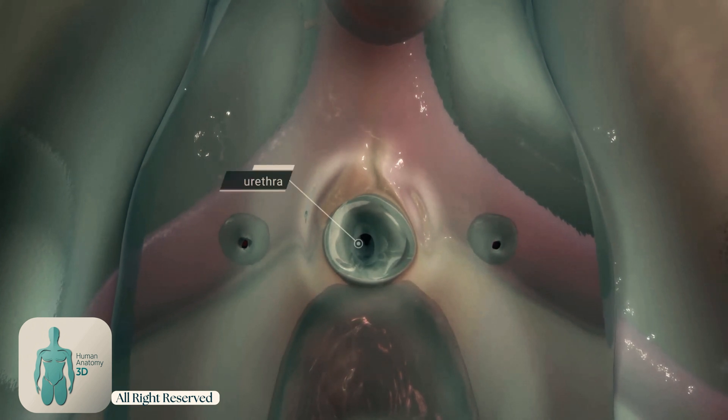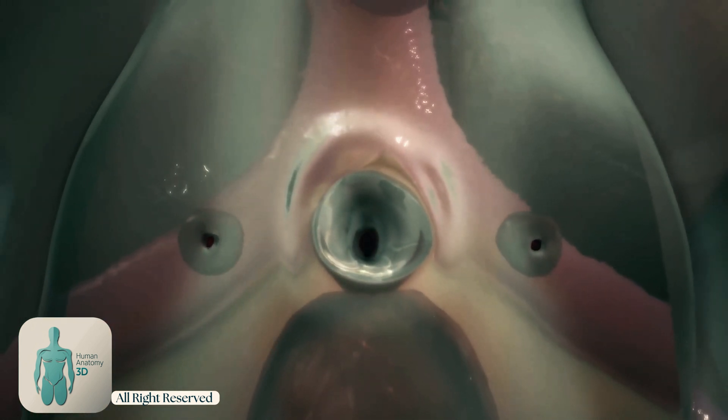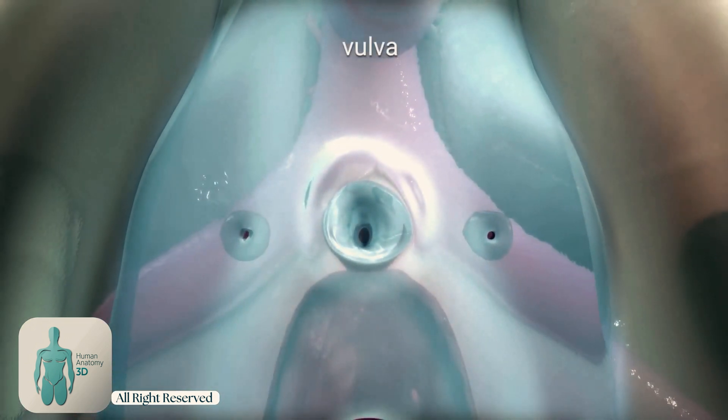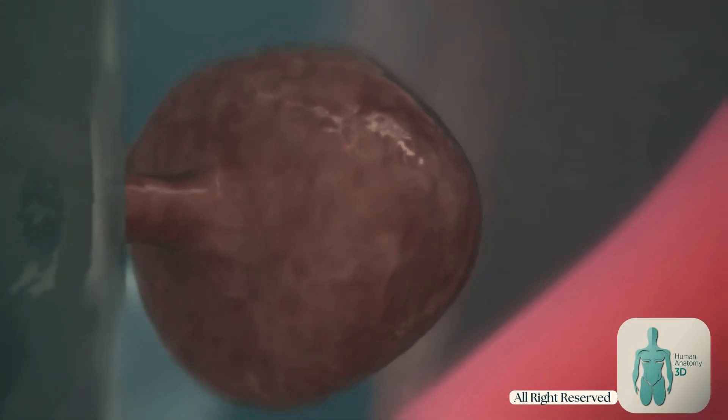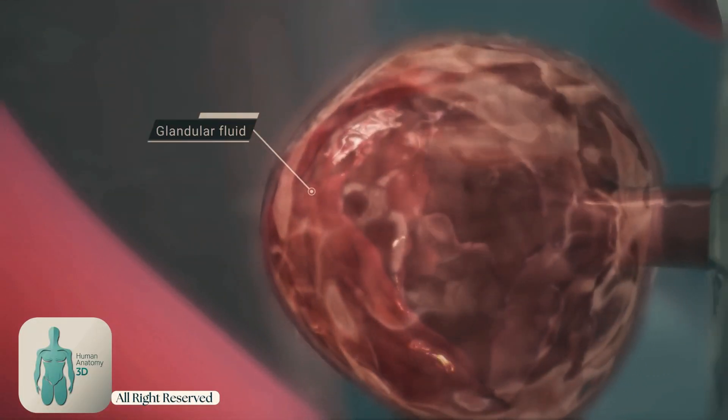The Skene's glands, also known as female prostate, are two small glands located on either side of the urethra in the female reproductive system. They are found near the opening of the urethra at 5 and 7 o'clock around the urethral orifice just inside the vagina.